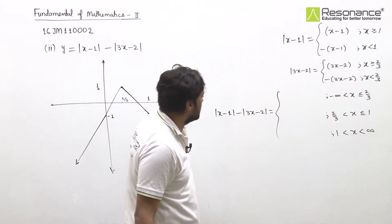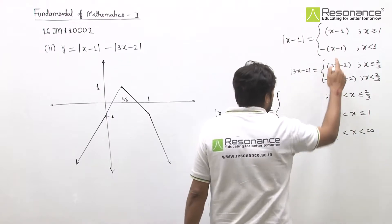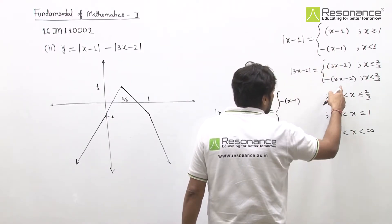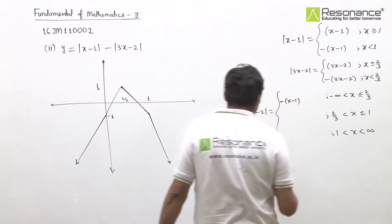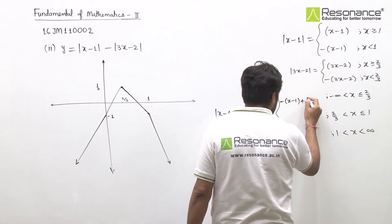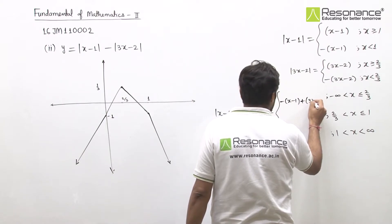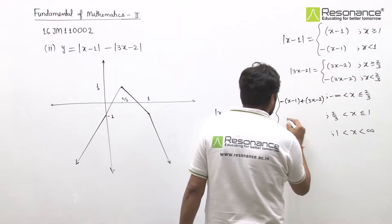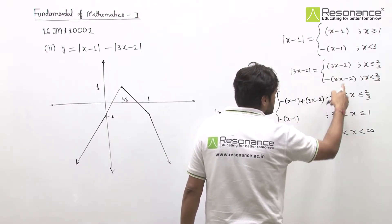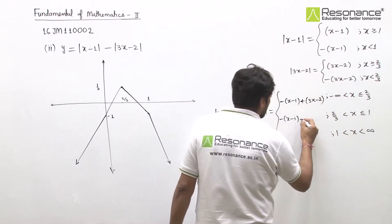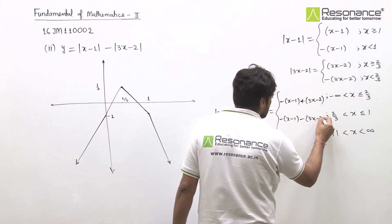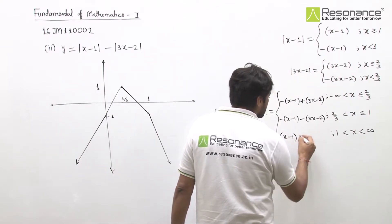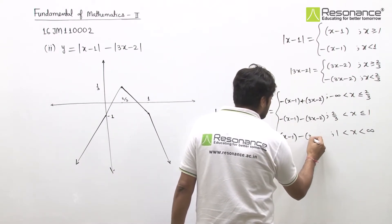For x less than 2/3: first term is minus (x minus 1), second is minus of minus (3x minus 2), giving minus x plus 1 plus 3x minus 2. For x between 2/3 and 1: x is still less than 1 so first term opens with minus; but x is greater than 2/3 so second term opens with plus, giving minus (x minus 1) minus (3x minus 2). For x greater than 1: both open with plus, giving (x minus 1) minus (3x minus 2).